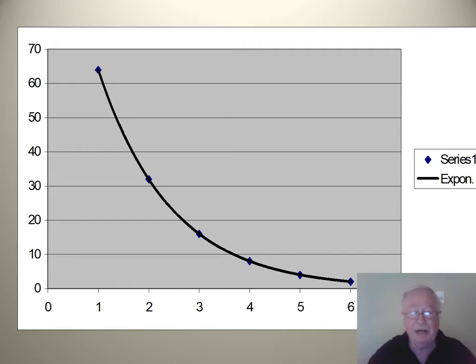For instance, how much drug was there at two and a half hours? Well, you just go to two and a half on the horizontal axis, draw a straight line up to meet the curve, then across to the vertical axis and you'll read off there was about 22 mils of drug left in the person.